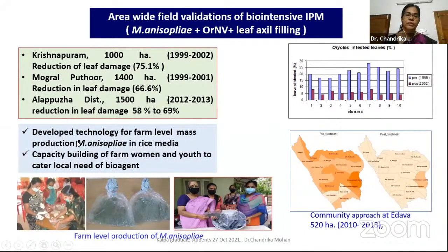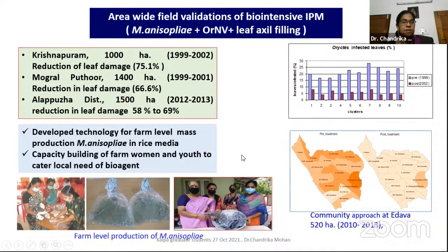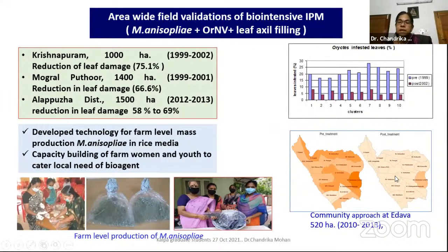Farm-level mass production technology has been developed with farm women multiplied, and capacity building is done for farm women for income generation as well as local availability of bio-agents. This community approach village-wise has been done extensively — at least a village or a sizable amount of land has to be taken at a stretch for management practice.